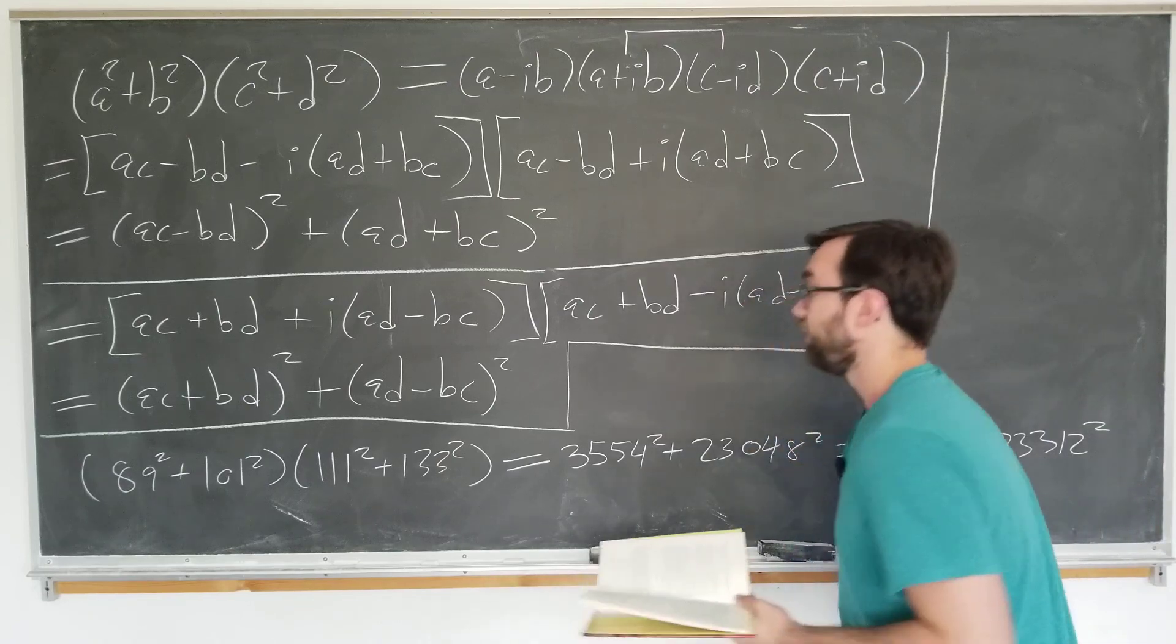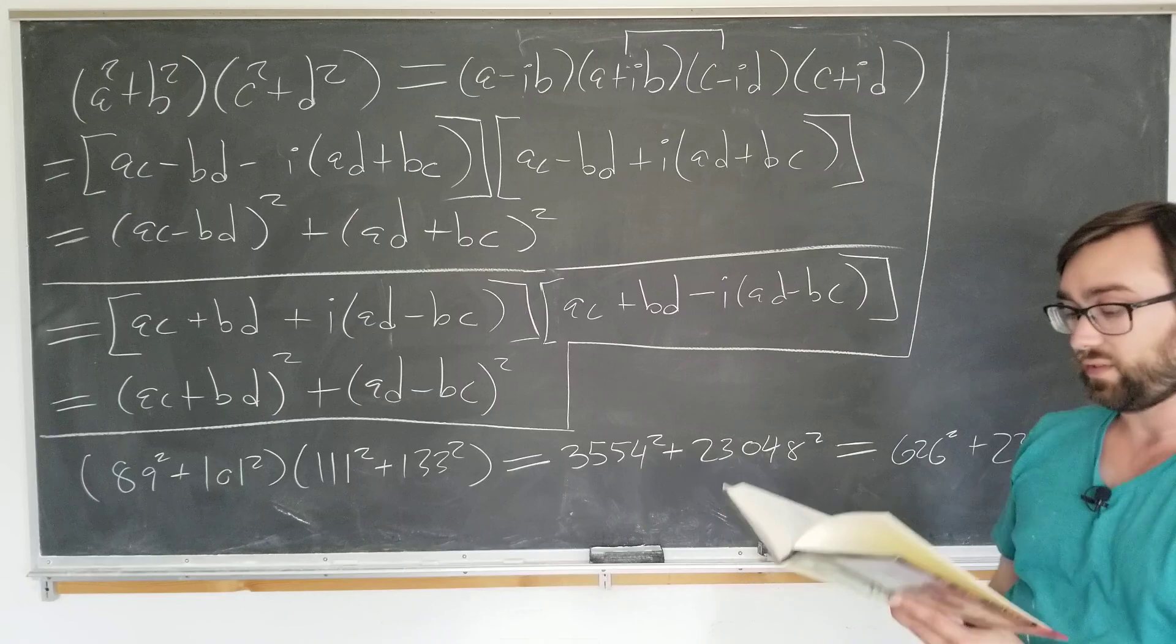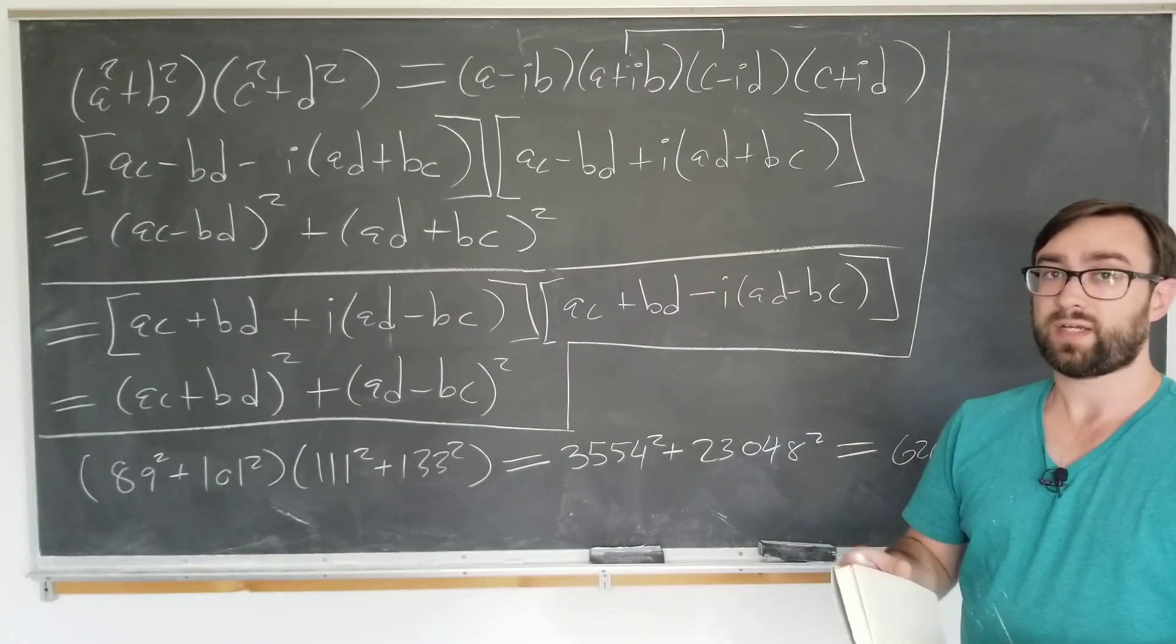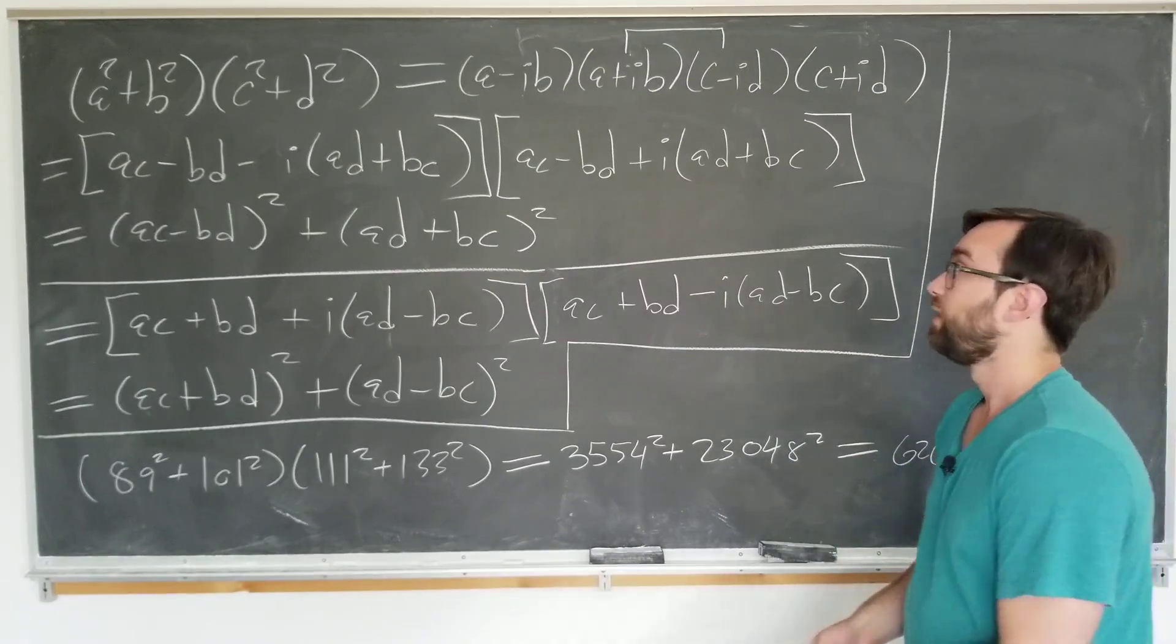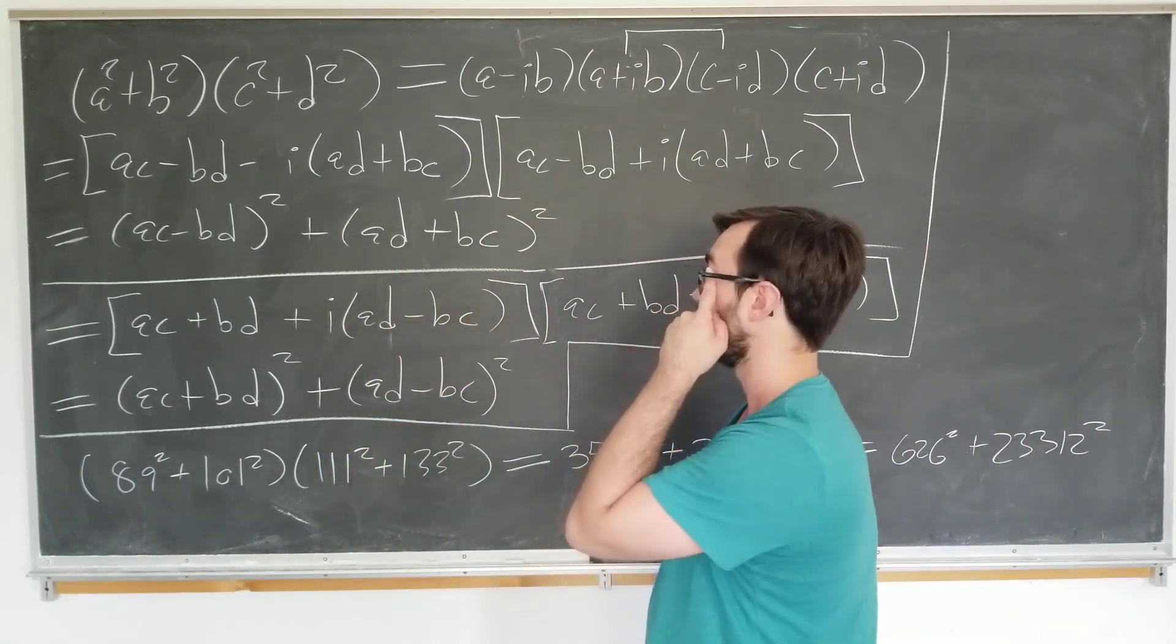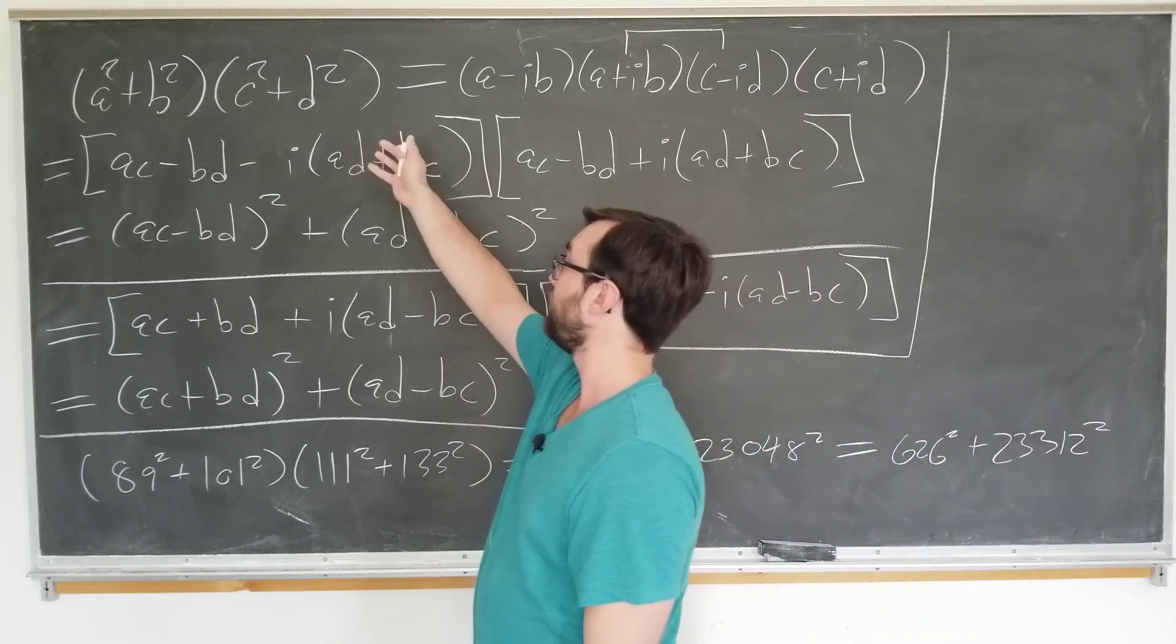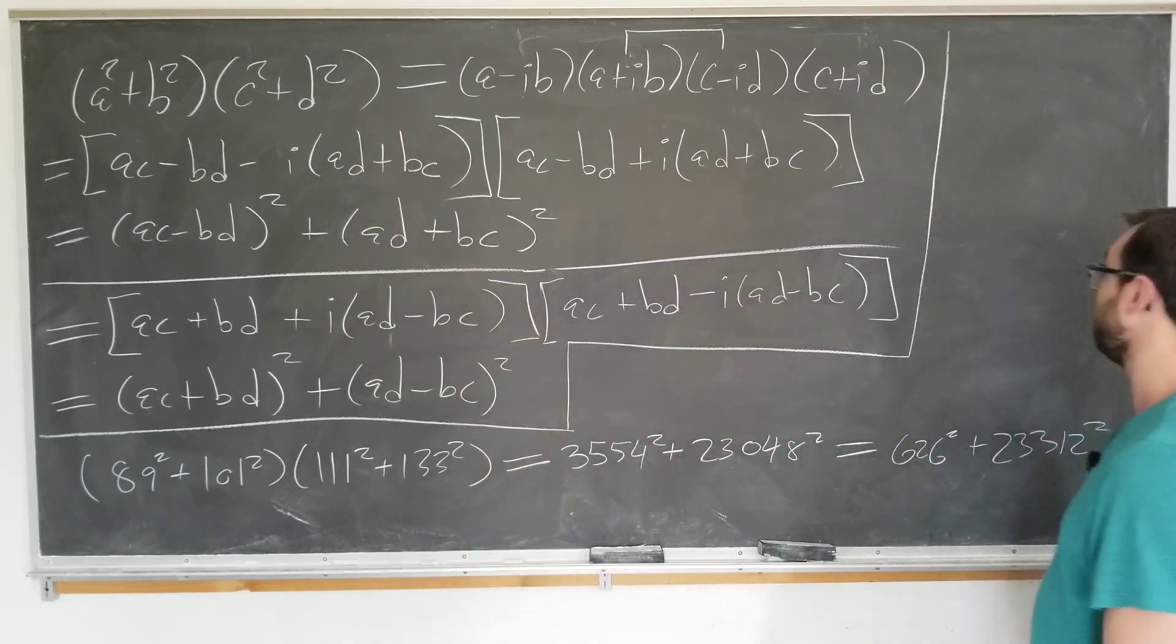Which is also equal to 626 squared plus 23,312 squared. If you want to, you can certainly square this all out, but I'm just going to trust Mr. Nahin on this. So that's how you can use this to find the U1 and V1 and 2, the V1 and 2 if you're given A, B, C, D squared in this kind of way.